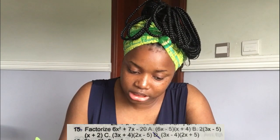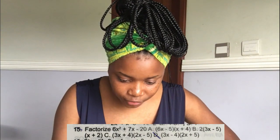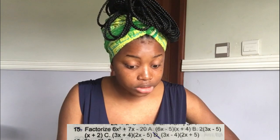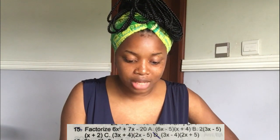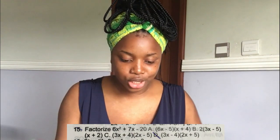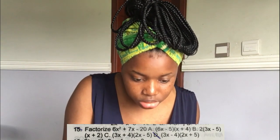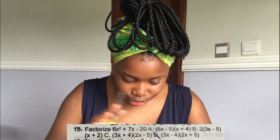They say factorize 6x squared plus 7x minus 20. I'm going to pick randomly from the options. My answer is going to be C because C has three, and three times two is six. It also has four, and four times five is 20. So my answer is C. It's wrong. Hmm.